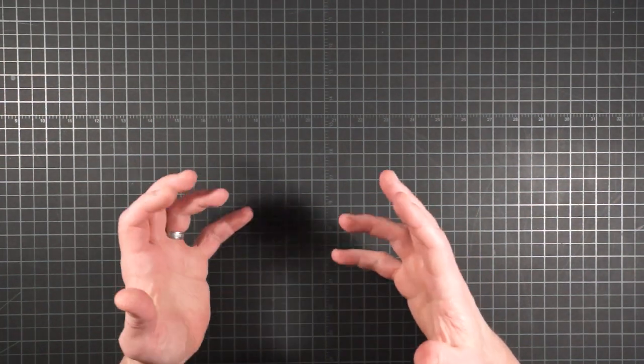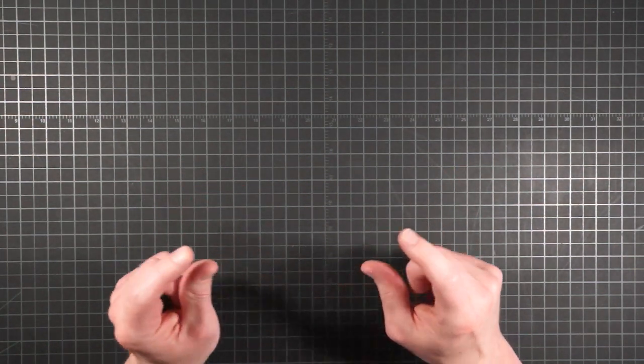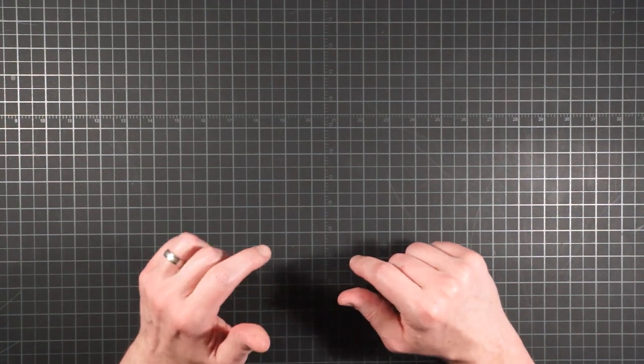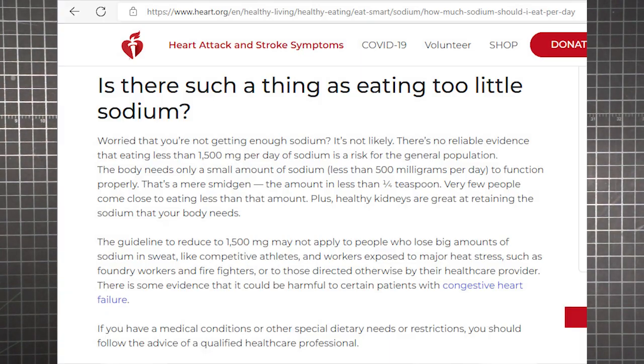Still, if a number like 7,500 milligrams of sodium alarms you, that may be because you've been conditioned to think in smaller numbers. In the US, the recommended daily allowance of sodium is 2,300 milligrams or less, while the American Heart Association would like to see it as low as 1,500 milligrams.